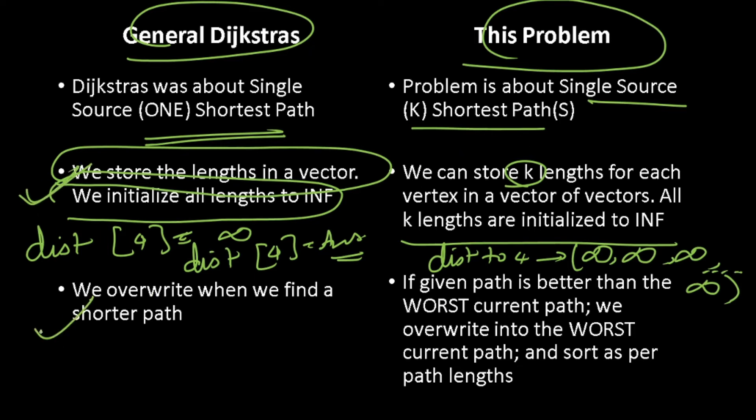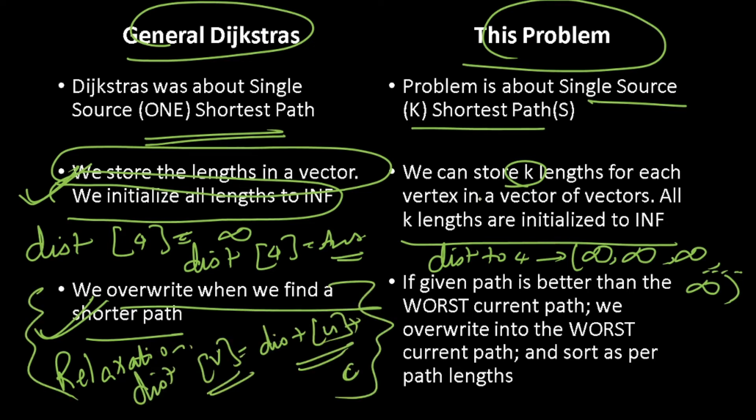Now, the second aspect, whenever we find a shorter path, we overwrite. This step is called relaxation. On the other hand, for this problem, we won't simply do a relaxation. What will we do?